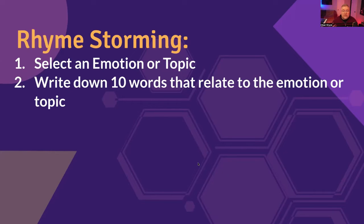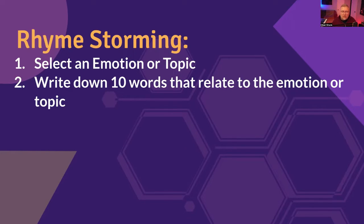Step number two is to really think deeply about your emotion or topic and try to come up with at least 10 words that relate to your emotion or your topic. You can have more than 10, but try to have at least 10 words. That's step two.